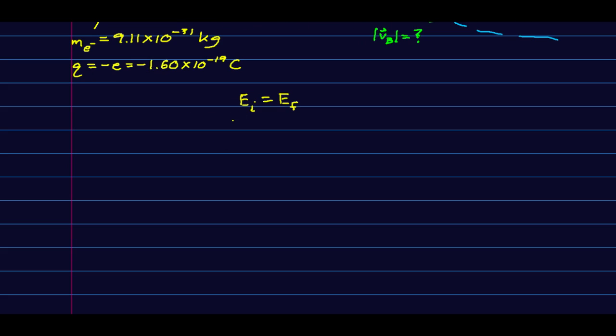Here we go. We have our initial kinetic energy plus our initial potential energy equals all the same stuff final. And we know that our U's are all QV's, right? But Q is just negative e, so let's expand this out using that.